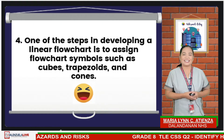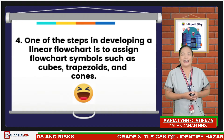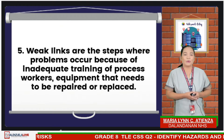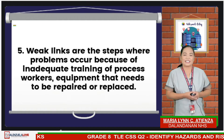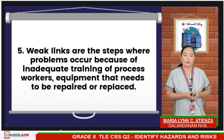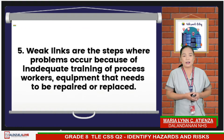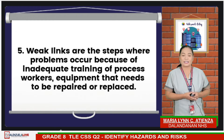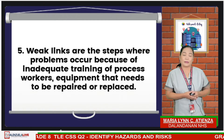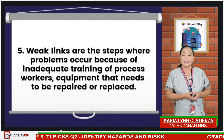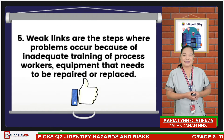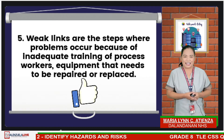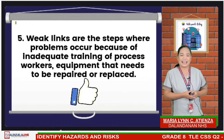The answer is a ha-ha emoji. And the last, number 5: weak links are the steps where problems occur because of inadequate training of process workers' equipment that needs to be repaired or replaced. Alright, you got it. It's a thumbs up. Nice.